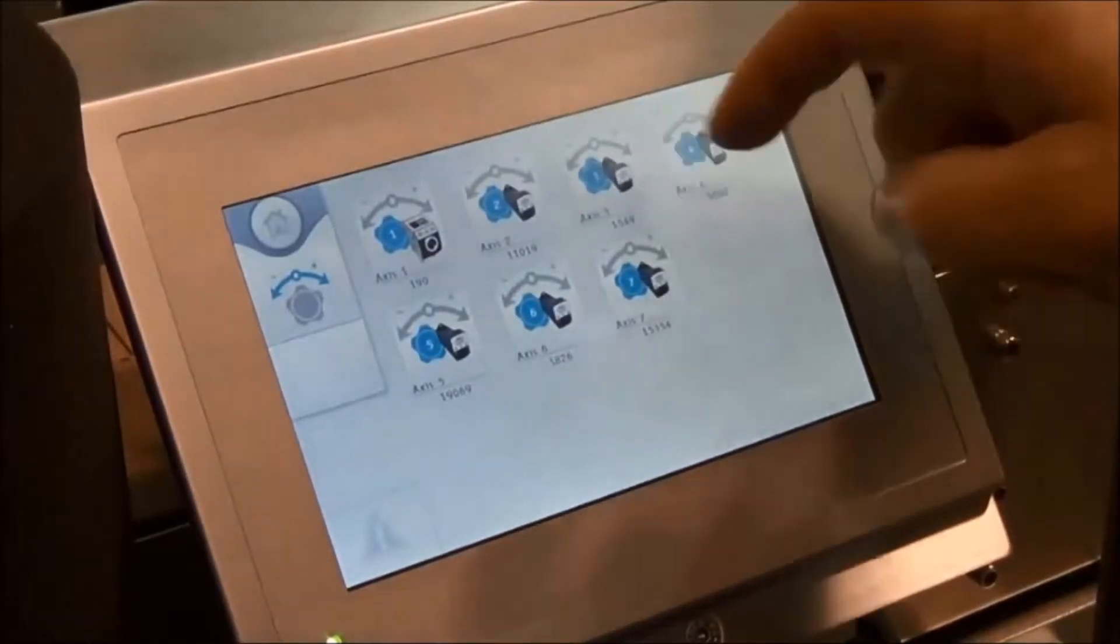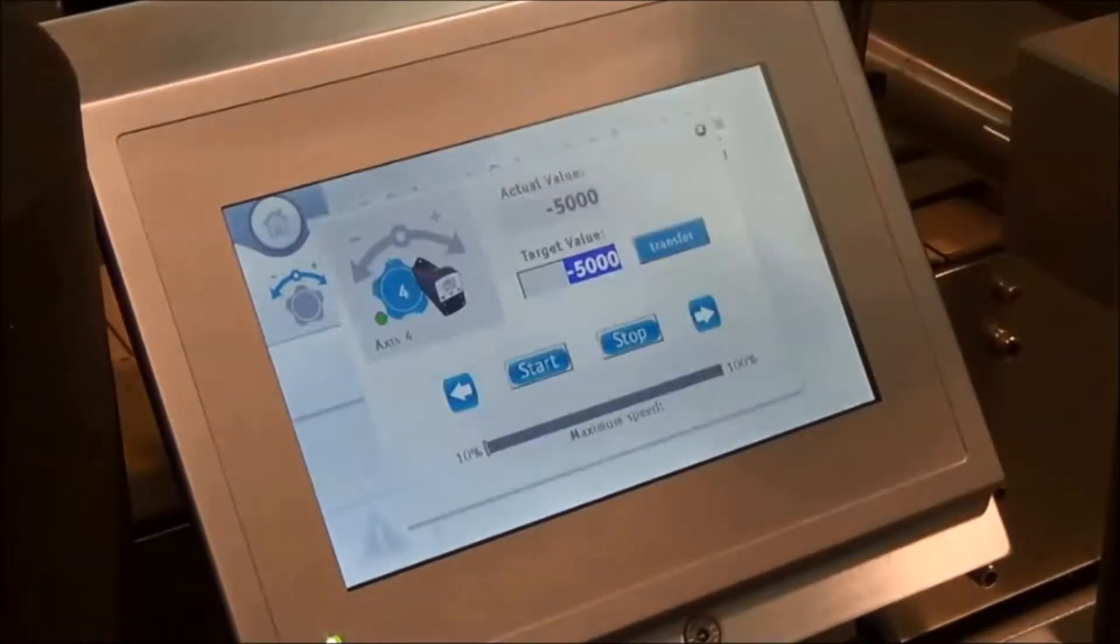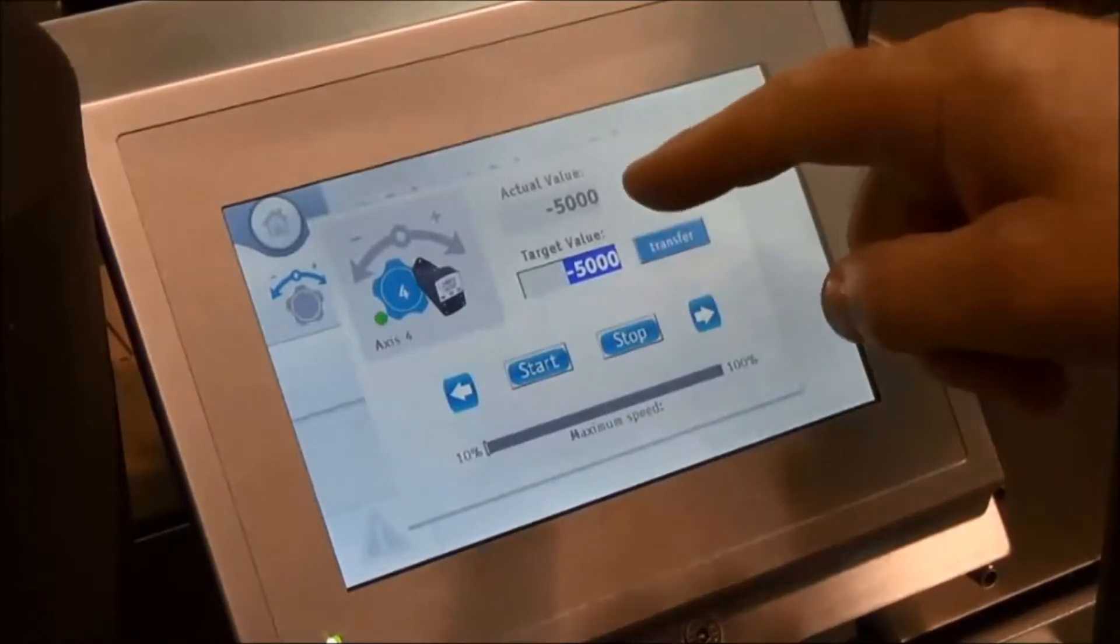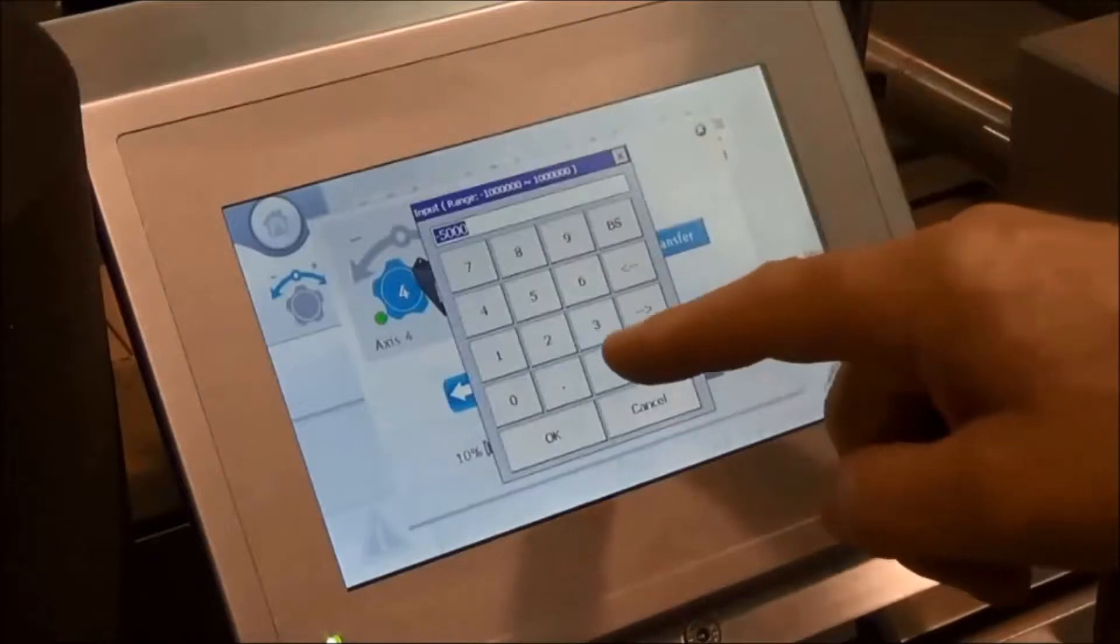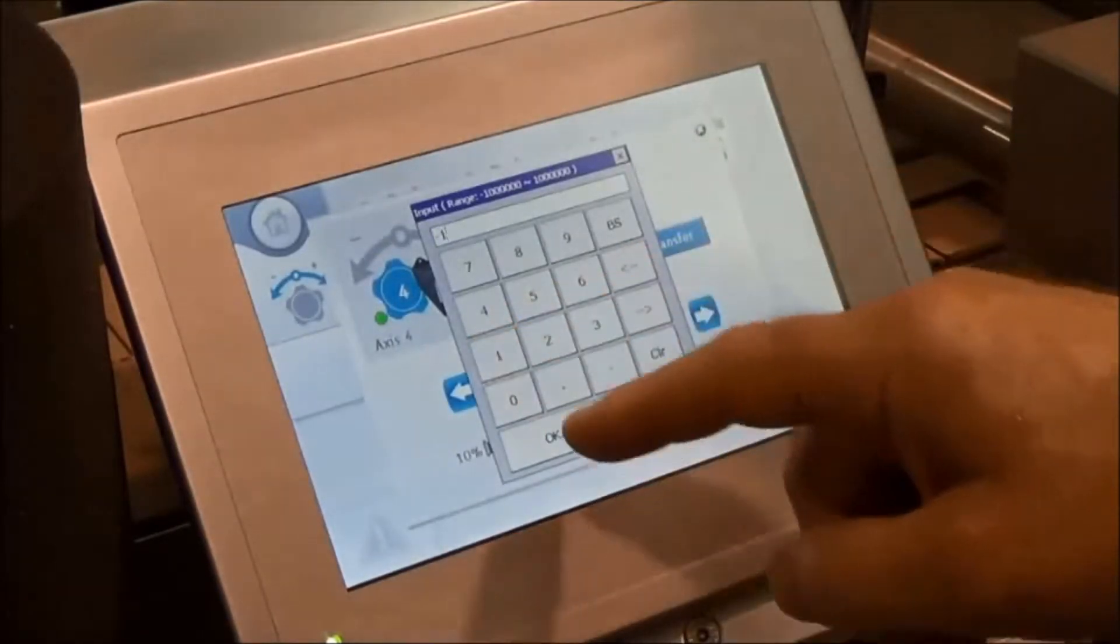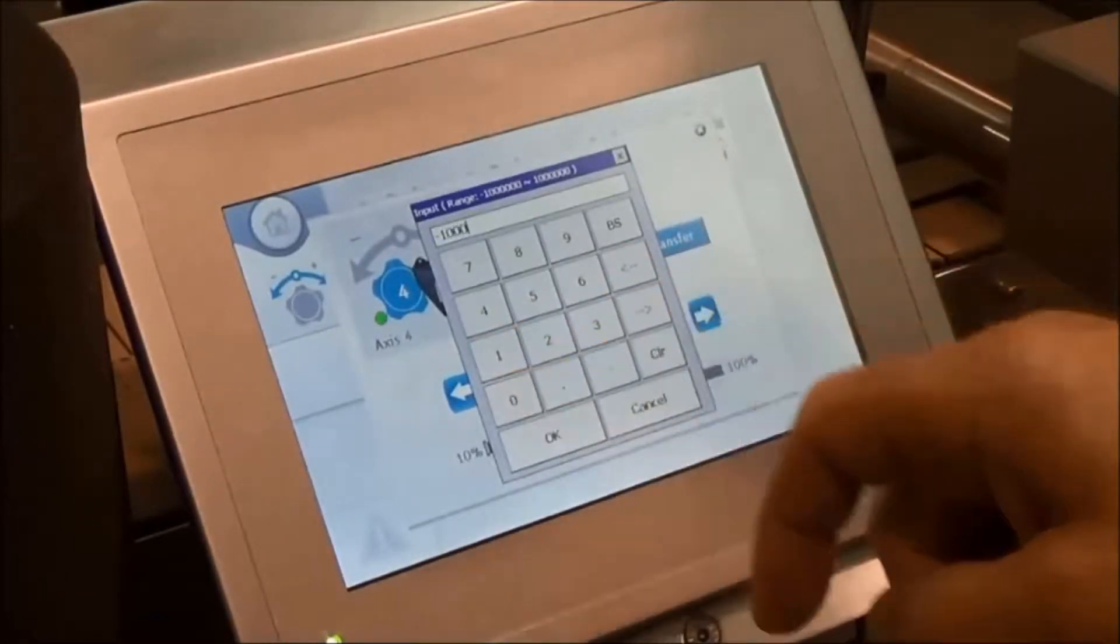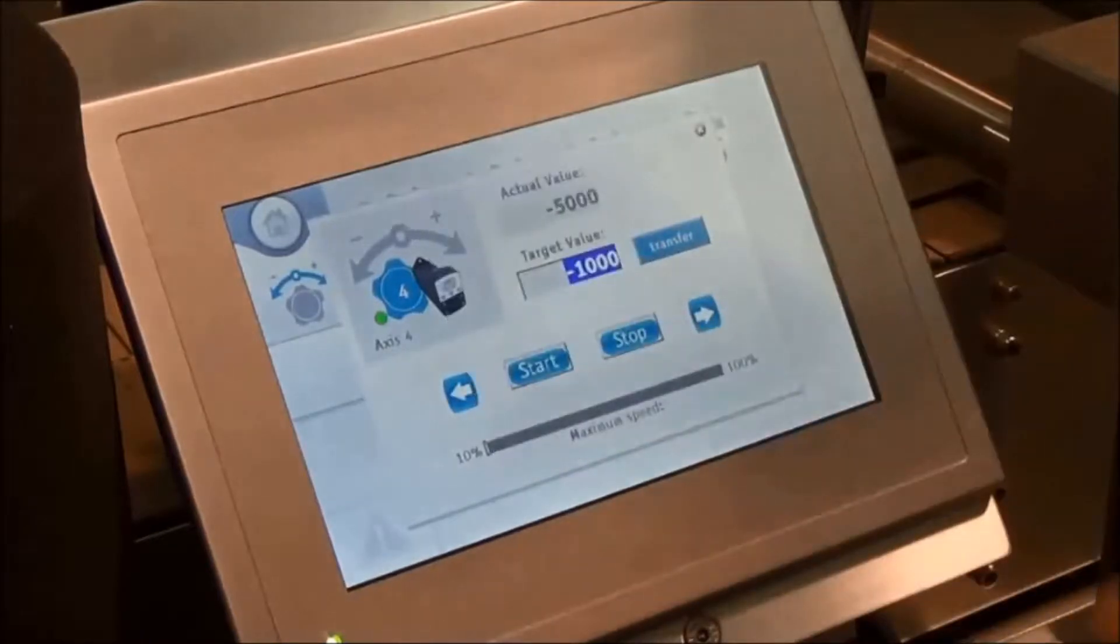Here we can see the current actual position value of minus 5,000. We are going to enter in a new position value at minus 1,000. We then transfer this value to the device and you will see by the red circle now shown that the axis is not in position.